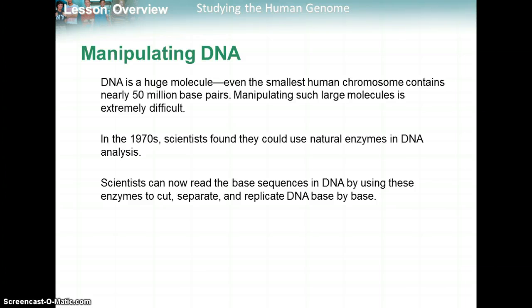DNA is a huge molecule. Even the smallest human chromosome contains nearly 50 million base pairs, so manipulating such a large molecule is extremely difficult. In the 1970s, scientists found that they could use natural enzymes in DNA analysis. Scientists can now read the base sequences in DNA by using these enzymes to cut, separate, and replicate DNA bases — base by base — and that can help us identify the order of bases for certain genes.